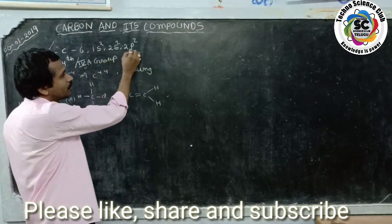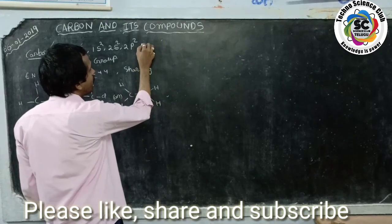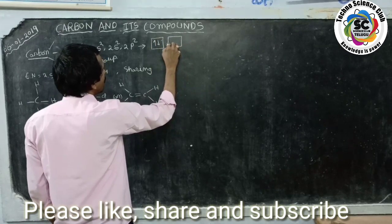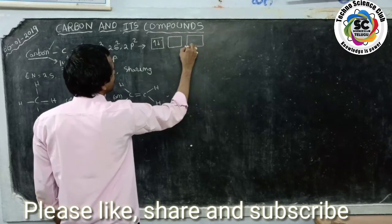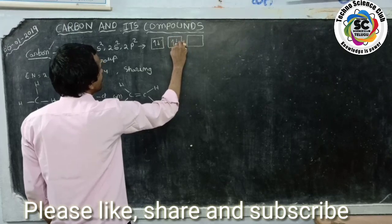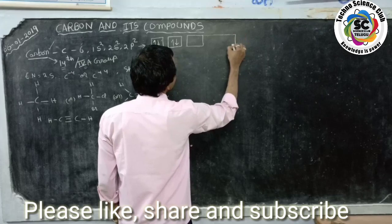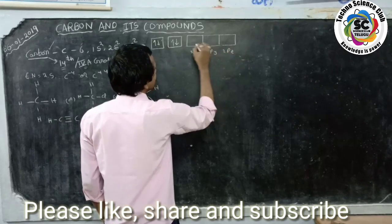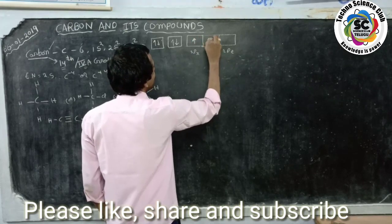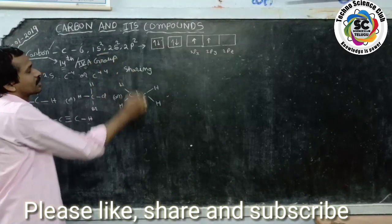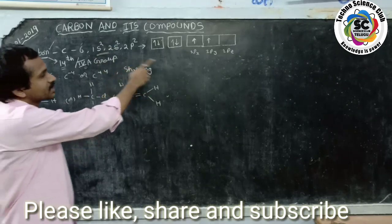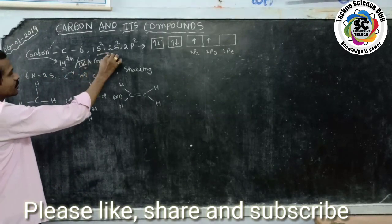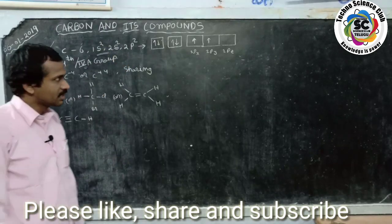Carbon is denoted by the letter C and has atomic number six. The electronic configuration of carbon is 1s² 2s² 2p². In box form, 1s² is a pair of electrons. Carbon has two orbits; its valency orbit is the second orbit. In this second orbit there is a pair of electrons in 2s and three orbitals - 2px, 2py and 2pz - with only two unpaired electrons. So 2p² means 2px¹ 2py¹.